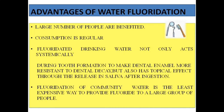Advantages of water fluoridation include that it benefits a very large number of people — an entire city can achieve 50% caries prevention. It acts not just systemically but also has a topical effect through saliva, continuously replenishing lost minerals. It is the least expensive way to provide fluoride to a large group of people when considering the large population served, despite the high installation cost.